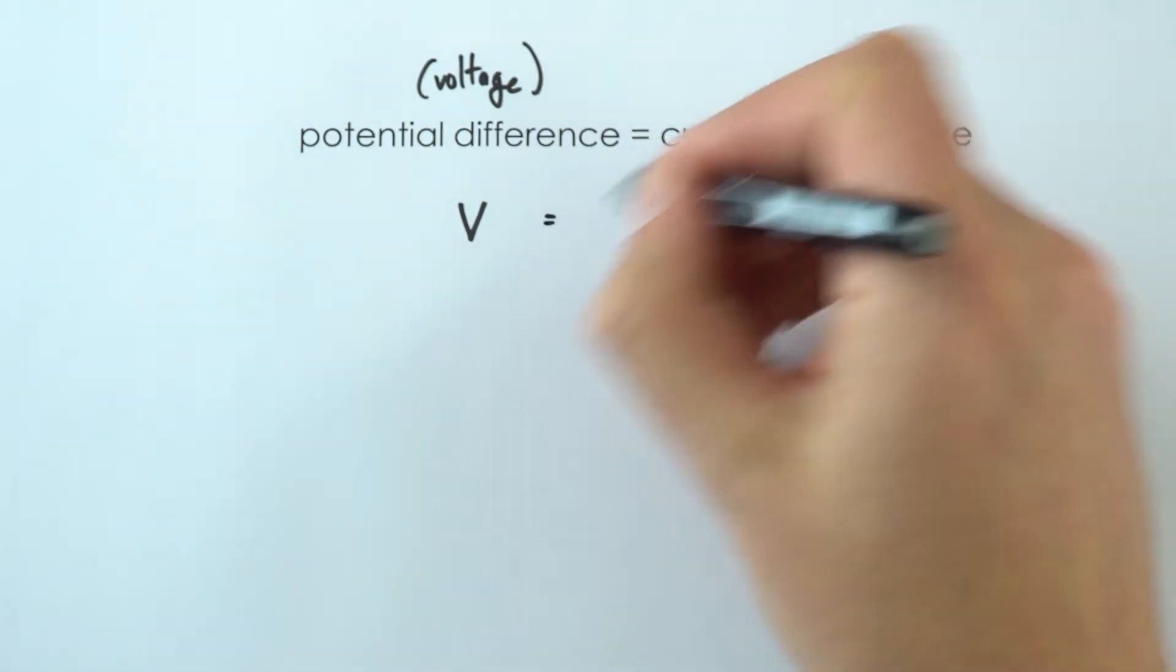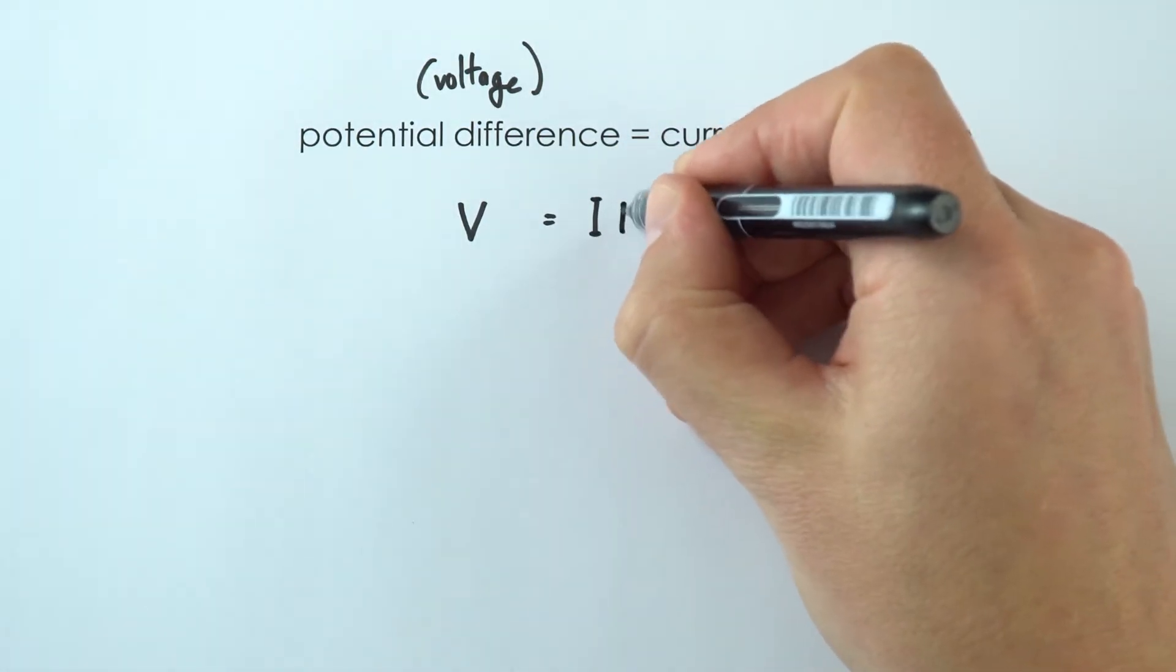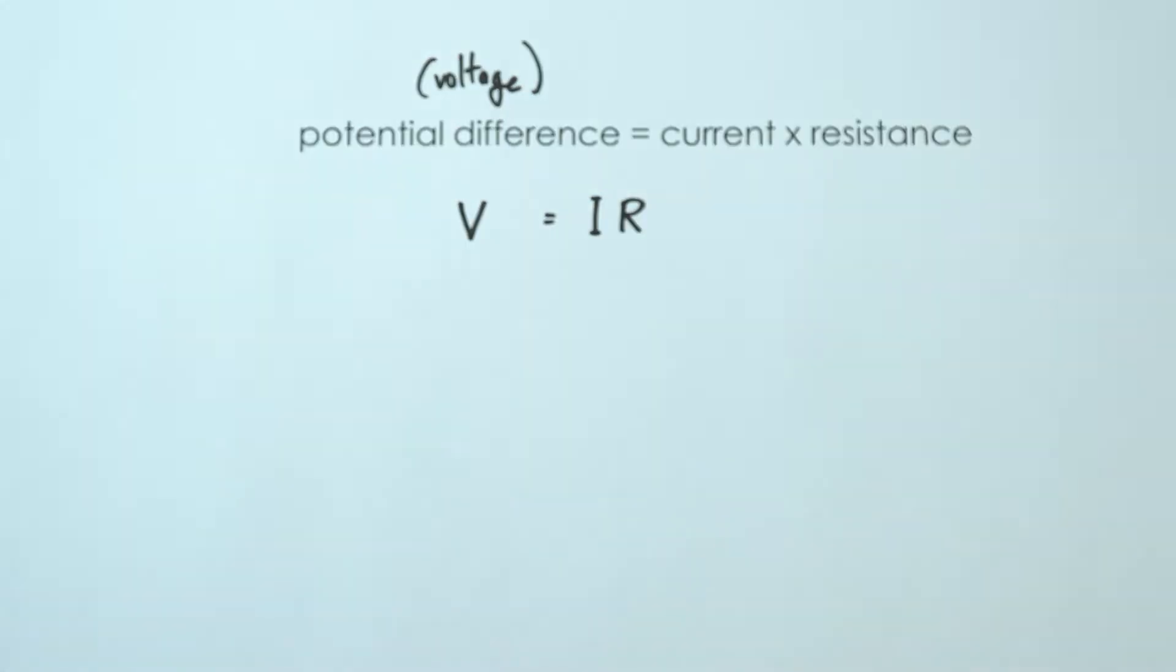Now the current, it's the intensity of current, so that's capital I, and resistance is capital R. So this equation here, V equals IR, is just something that you need to remember.